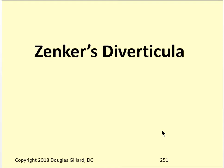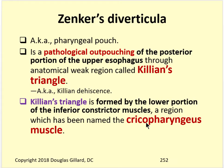Zenker's Diverticula - what is it? Also known as pharyngeal pouch. It's a pathological outpouching of the posterior portion of the upper esophagus through an anatomical weak spot called Killian's Triangle, which you should have had engraved too, because that's a very high-yield piece of anatomy. We'll go over the anatomy in case you don't remember it or in case it wasn't covered.